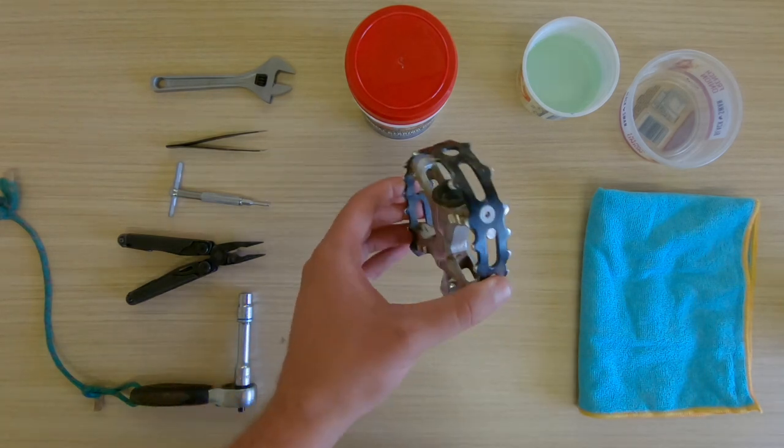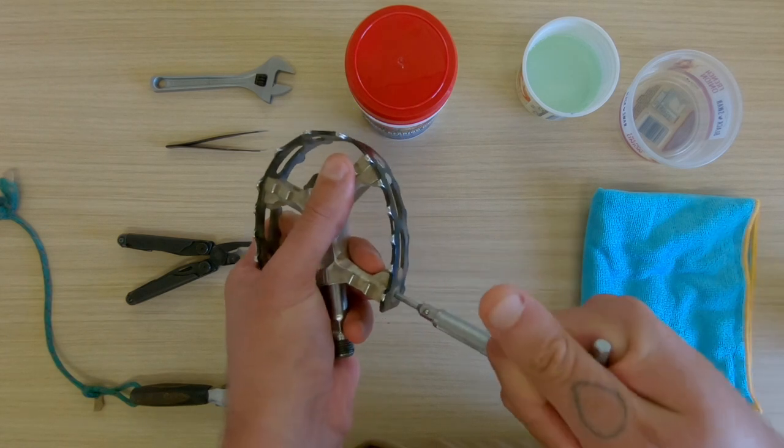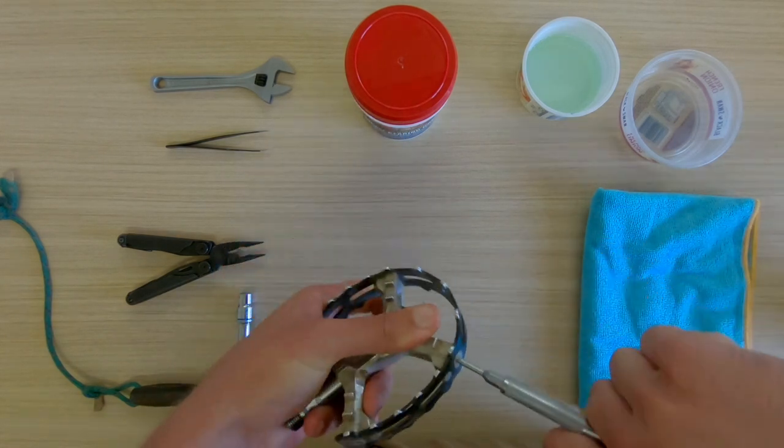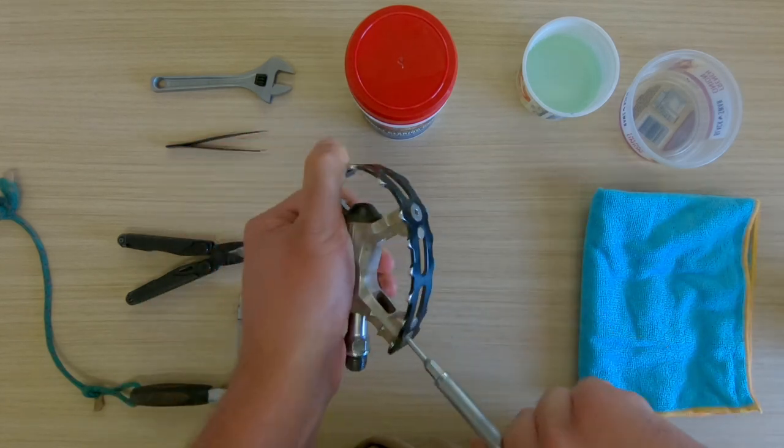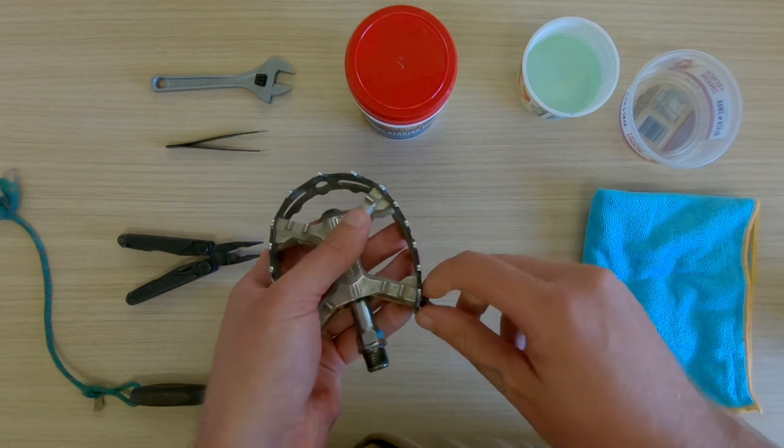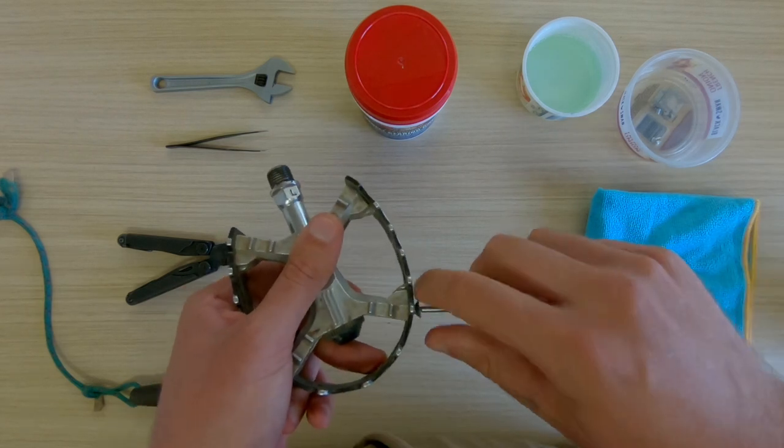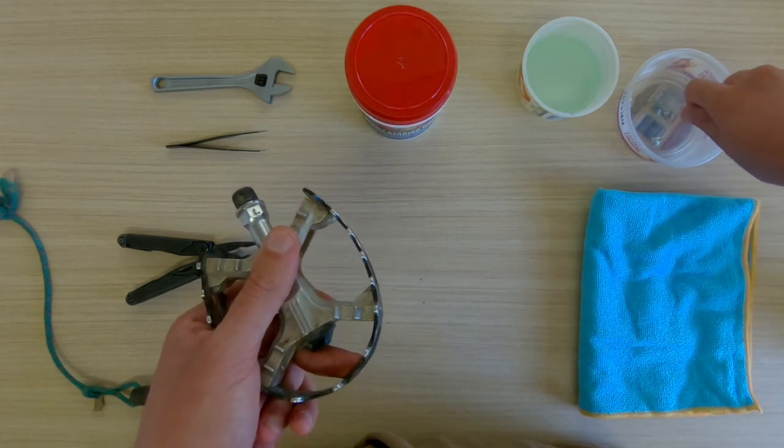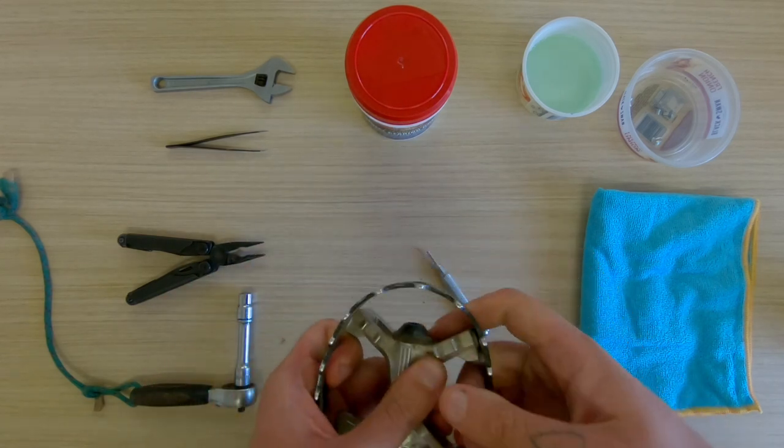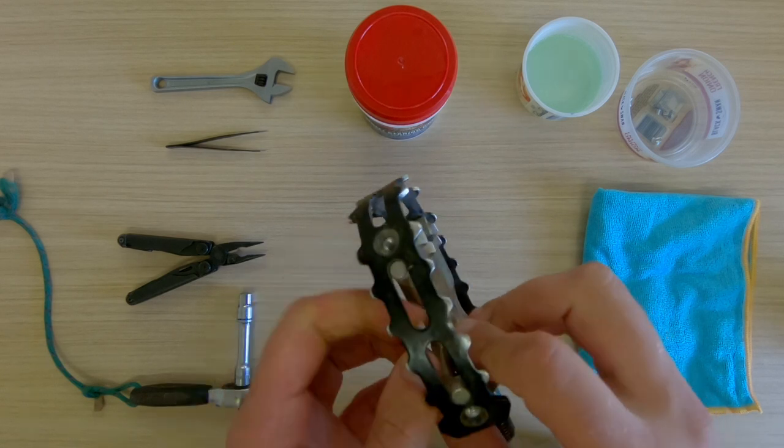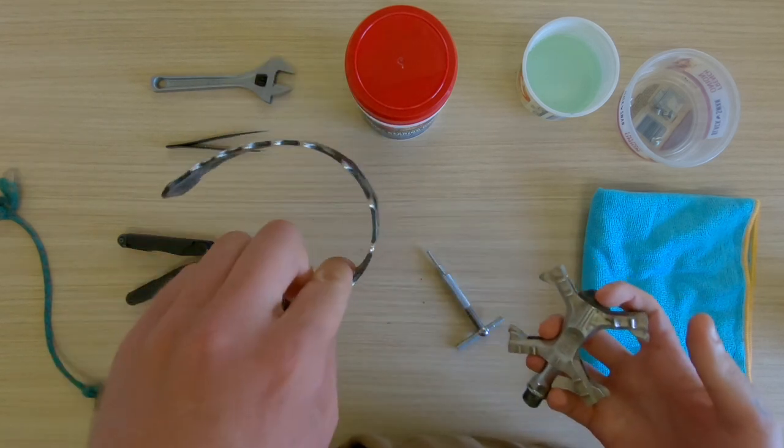First we need to take this thing apart. Take your 3mm and take this cage off. This is just going to let us get in there and work a bit easier. Once we've got all the bolts out, this should just come off.